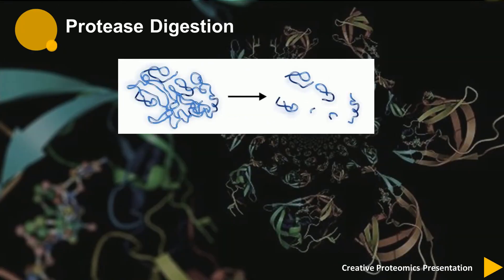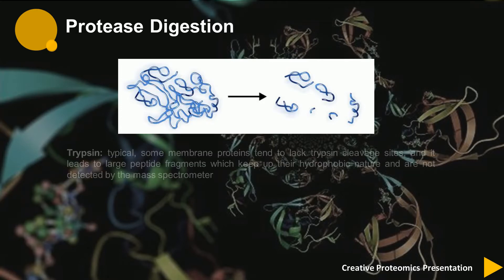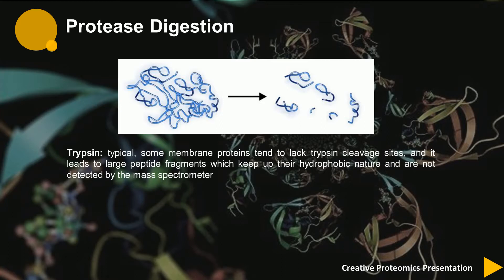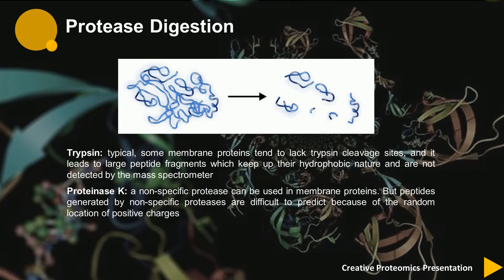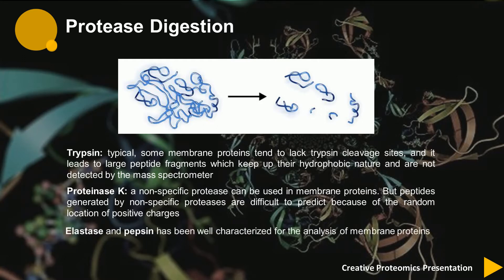For effective digestion, the backbone of the proteins must be accessible for the proteolytic enzymes. However, access to certain parts of membrane proteins is often blocked by sugars or lipids. Trypsin digestion is a typical approach, but some membrane proteins tend to lack trypsin cleavage sites, leading to large peptide fragments that retain their hydrophobic nature and are not detected by the mass spectrometer. Proteinase K, which is a non-specific protease, can be used for membrane proteins, but peptides generated by non-specific proteases are difficult to predict because of the random location of positive charges. Elastase and pepsin have been well characterized for the analysis of membrane proteins.